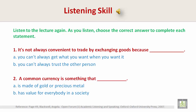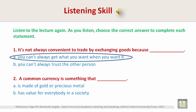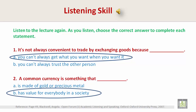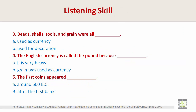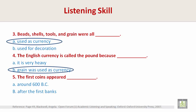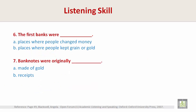Number one: It's not always convenient to trade by exchanging goods because... Answer A: You can't always get what you want when you want it. Number two: A common currency is something that... Answer B: Has value for everybody in a society. Number three: Beads, shells, tools, and grain were all... Answer A: Used as currency. Number four: The English currency is called the pound because... Answer B: Grain was used as currency. Number five: The first coins appeared... Answer A: Around 600 BC. Number six: The first banks were... Answer B: Places where people kept grain or gold. Number seven: Bank notes were originally... Answer B: Receipts.